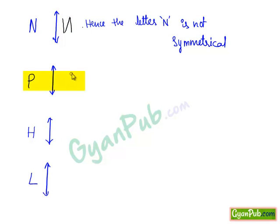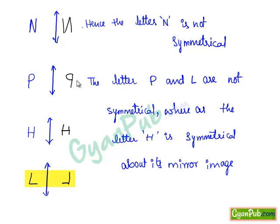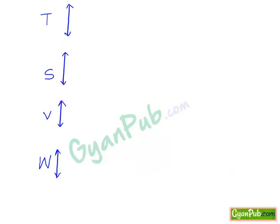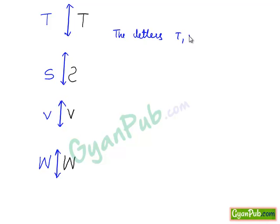Now if we see the letter P, the mirror image of P will be reversed. Hence it is also not a symmetrical letter. If we see H, it is symmetrical. L is not symmetrical. The letters P and L are not symmetrical, whereas the letter H is symmetrical about its mirror image. Now seeing other letters: T — its mirror image is the same as T. S is not symmetrical. V is the same as its mirror image, and W is also the same as its mirror image. Hence the letters T, V, and W are symmetrical about their mirror images.